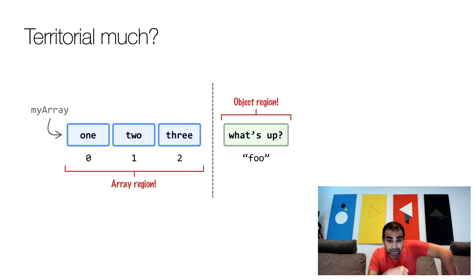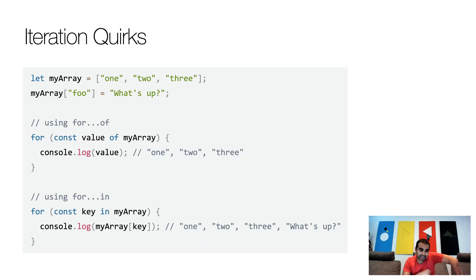Now, it is JavaScript. So as with all things, there is an exception. There's an exception if you're using the iterators in terms of for of and the for in approach. Now, the way for of works is that it only works on array values. So you only get the values one, two, and three. What's up is not shown at all.